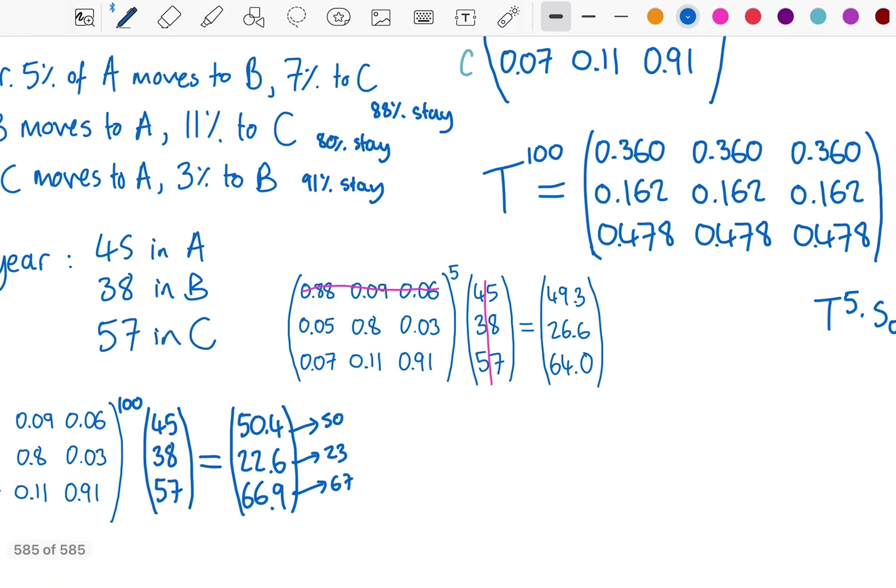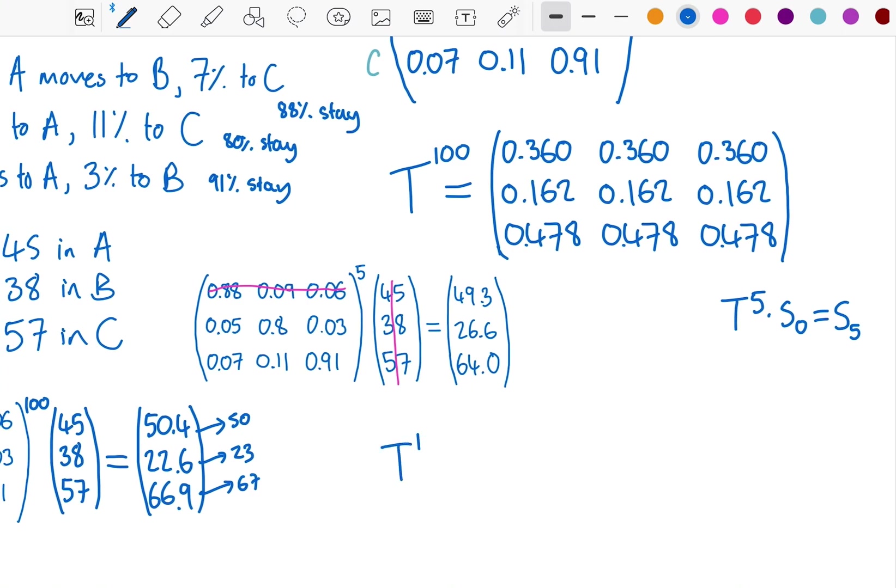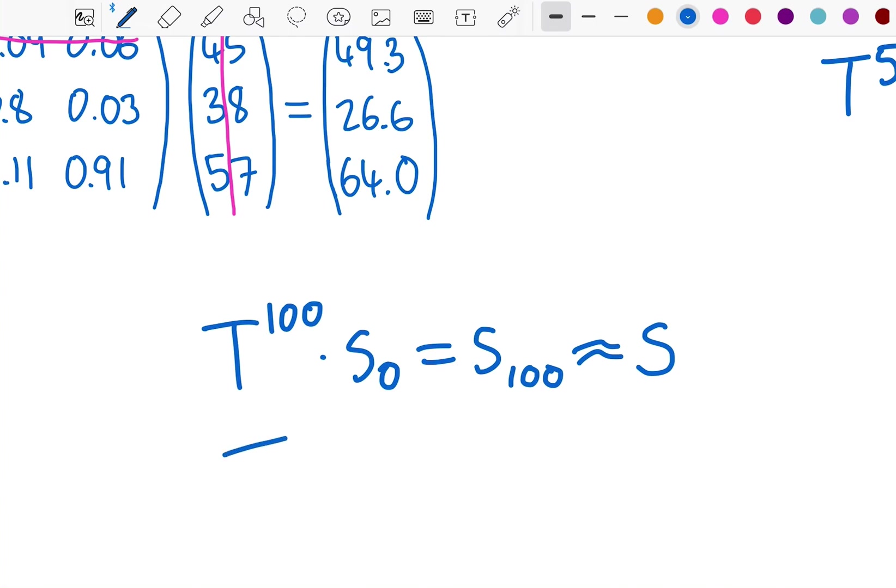And finally, what we can also say here is that, well, yes, T to the power of 100 times S0 would give us S100, which is approximately equal to the steady state, and we could call that S. But that's a bit clunky. What's much nicer is, as we said before, the steady state when multiplied by the transition matrix stays the same. It's now just in that state, it's steady. So we can say that when we multiply the transition matrix by S, I should get S. And that is more of a definition of the steady state. And that's actually something you could use algebraically if they kind of reversed the question and gave you some kind of unknown elsewhere and told you the steady state maybe. That is something to note because that would be a trickier way of asking a question about Markov chains.